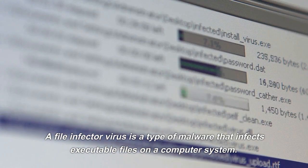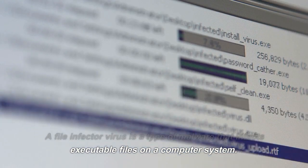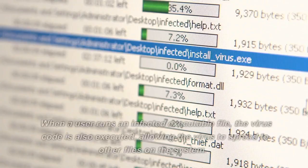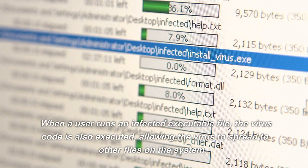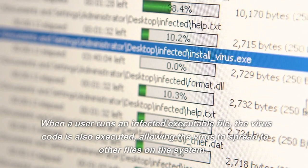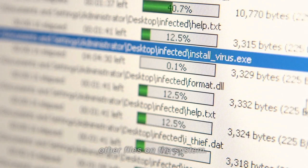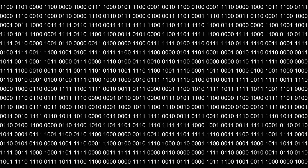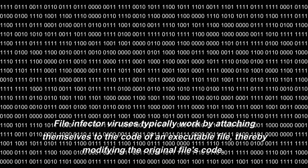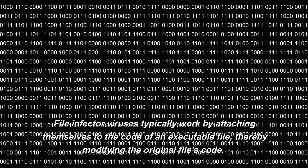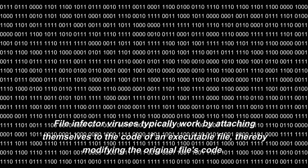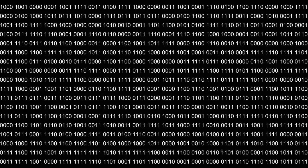A file infector virus is a type of malware that infects executable files on a computer system. When a user runs an infected executable file, the virus code is also executed, allowing the virus to spread to other files on the system. File infector viruses typically work by attaching themselves to the code of an executable file, thereby modifying the original file's code.